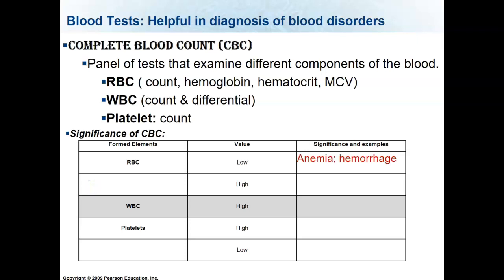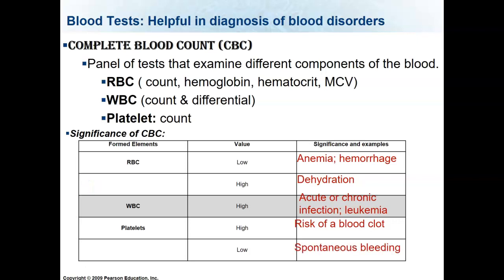If your red blood cells are very low, this could indicate anemia or a hemorrhage — for example, a bleeding ulcer. If your red blood cells are high, this could indicate dehydration. If your white blood cells are high, this could indicate an infection, either acute or chronic, or a cancer like leukemia. If your platelets are high, you have a very high risk of blood clot — too many platelets and there's a high chance they'll become sticky and create clots. If your platelets are too low, your clotting process can't happen and you'll be bleeding throughout your body.